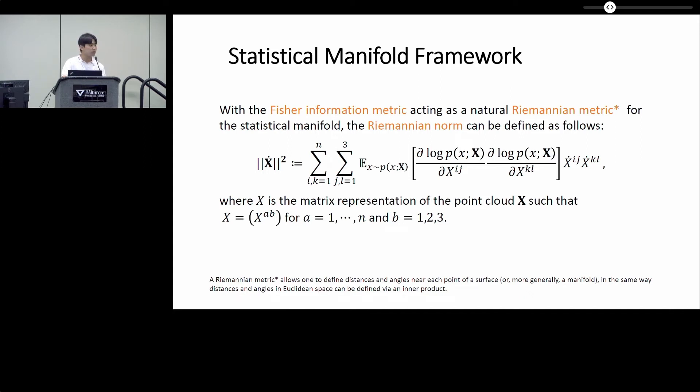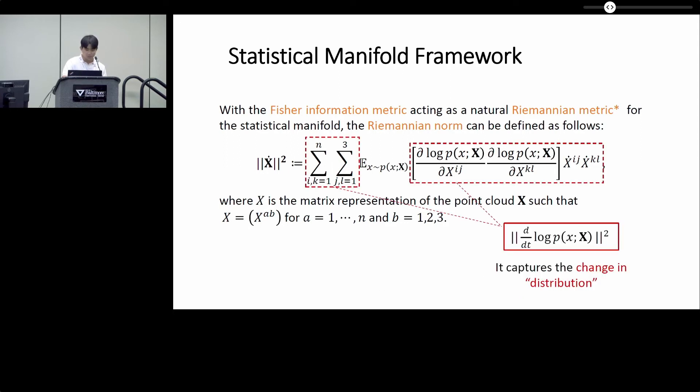Then a new Riemannian norm can be defined as follows. Basically, the Riemannian norm computes the norm of time derivative of the log probability density, which captures the change in distribution.